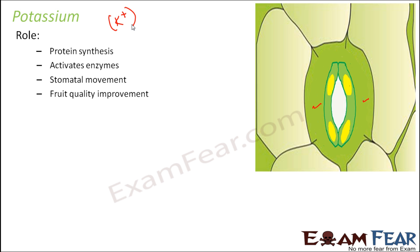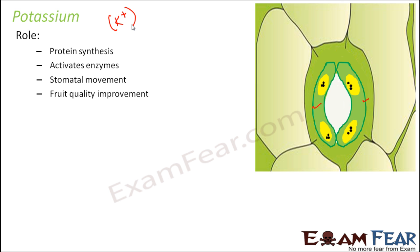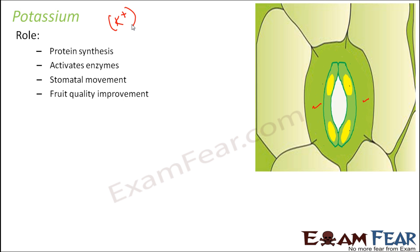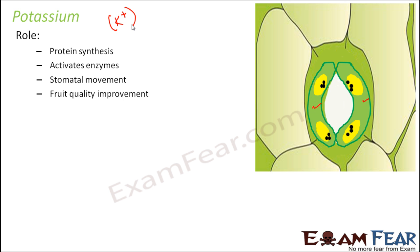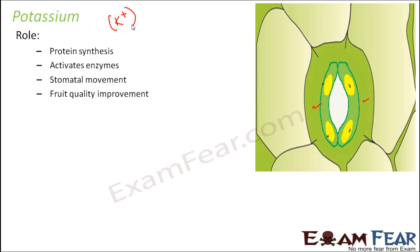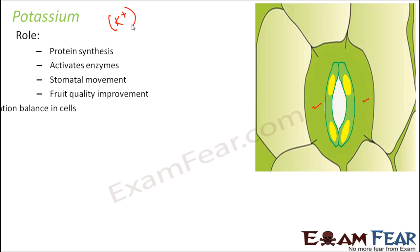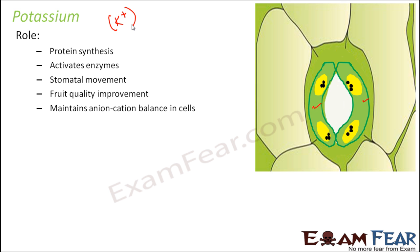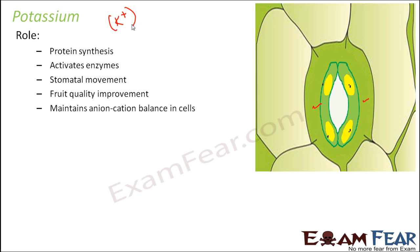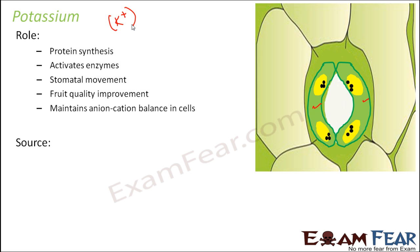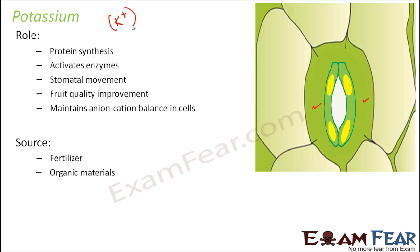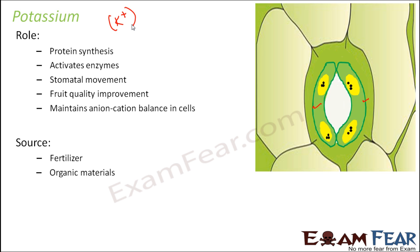Potassium is mainly present in those regions where new growth takes place. It maintains anion-cation balance in cells, so that a perfect balance is maintained — too much of either anions or cations could cause problems. It can be obtained from organic materials which are rich in potassium.